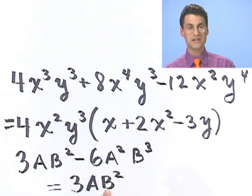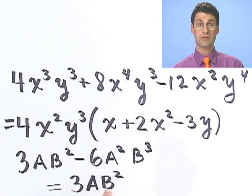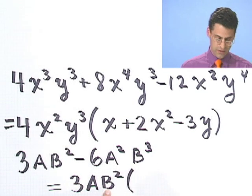So it looks like that 3ab squared is in fact the greatest common factor. And if I factor that out, what am I left with?